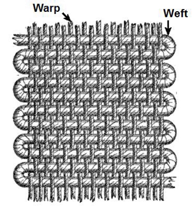Cloth is usually woven on a loom, a device that holds the warp threads in place while filling threads are woven through them. A fabric band can also be made using other methods including tablet weaving, back strap loom, or other techniques without looms. The way the warp and filling threads interlace with each other is called the weave.